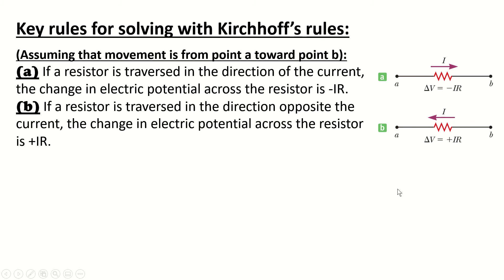The second case, if a resistor is traversed in the direction opposite the current, the change in electric potential across the resistor is positive IR. So, you're traveling from A to B and the current opposes your movement, so it will be plus IR.